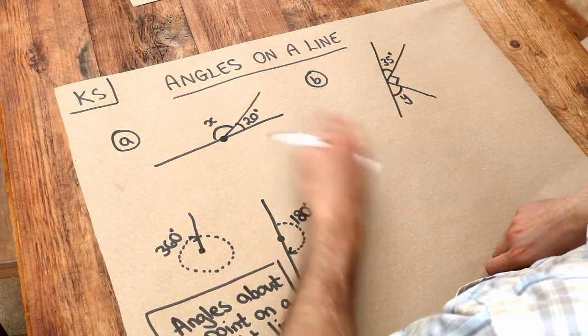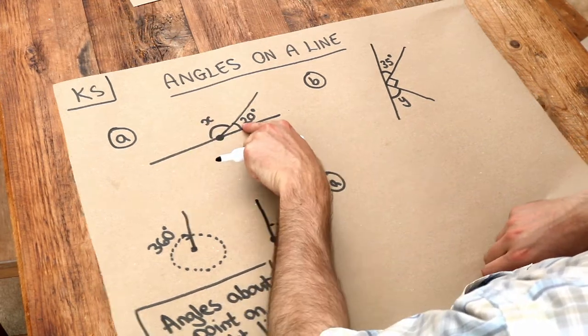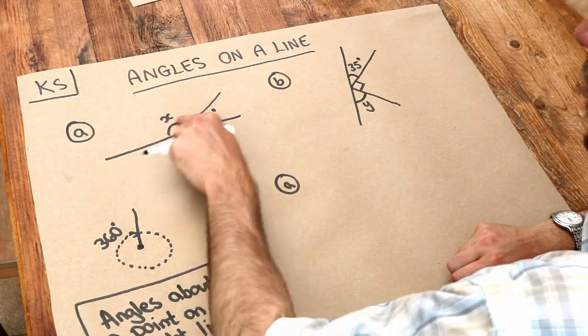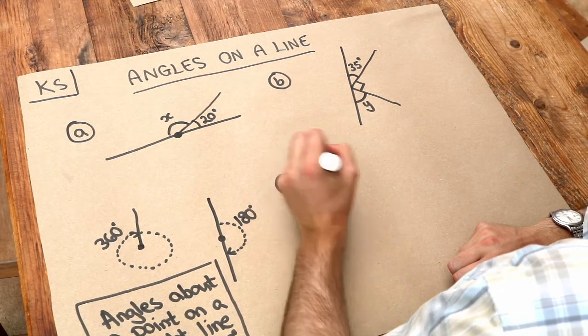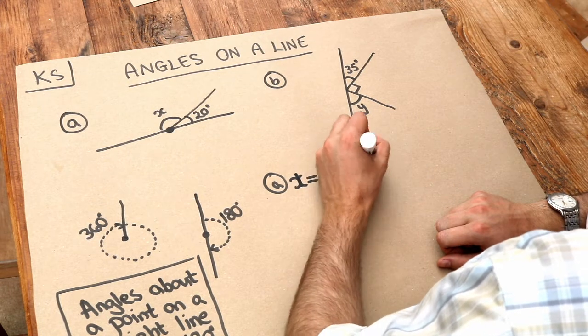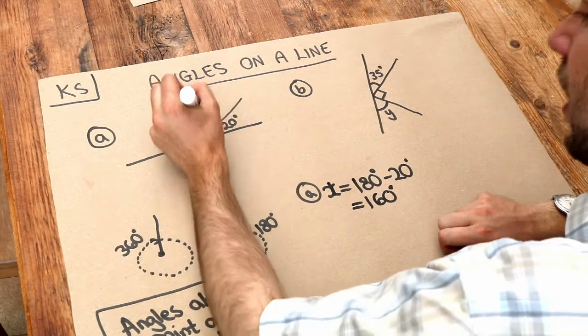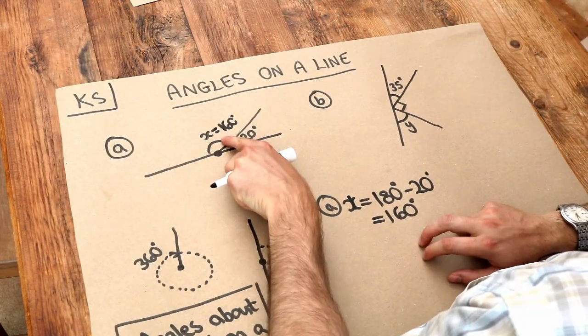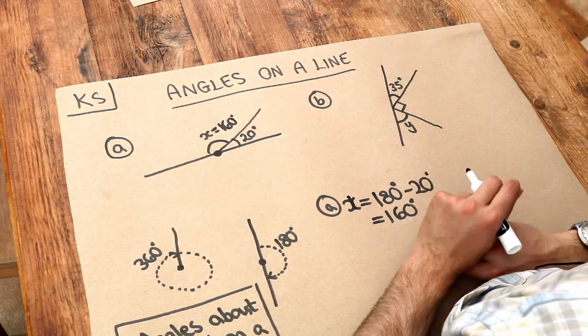So x and the 20 add up to 180 and therefore to find x we could just subtract 20 degrees from 180 to see what's left in the rest of this line. So x is equal to 180 degrees minus 20 degrees is equal to 160 degrees. Let's just check that's right. If this was equal to 160, well 160 plus the 20 does indeed add up to 180 degrees.